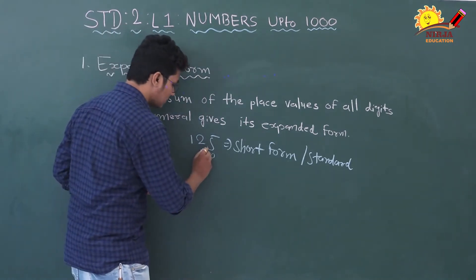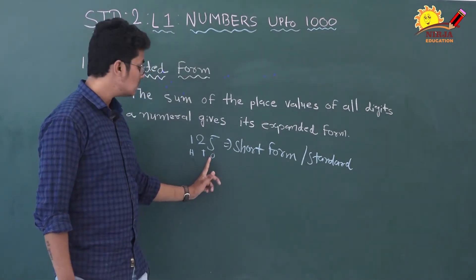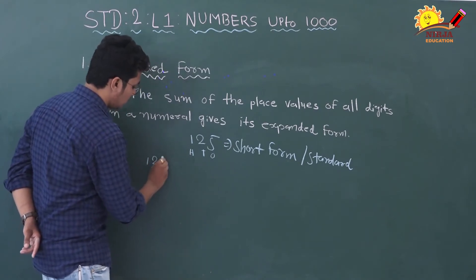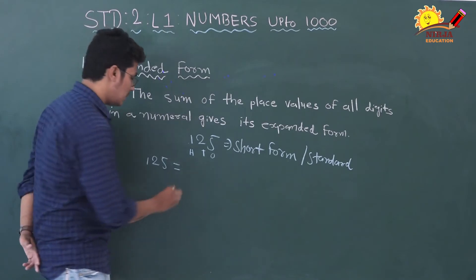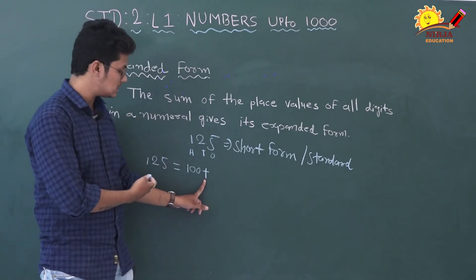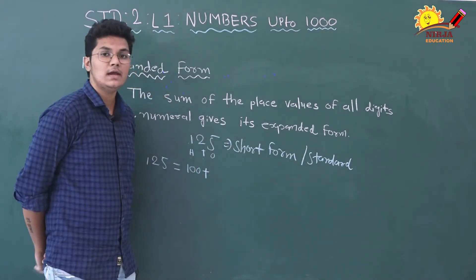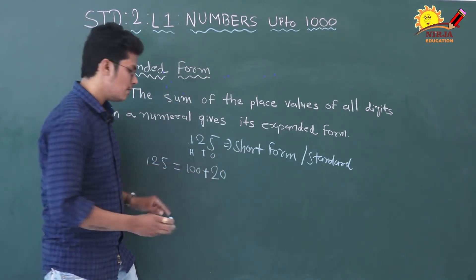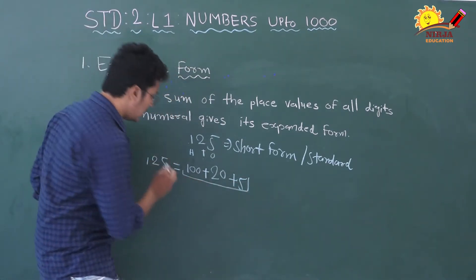2, tens ke place mein hai. And 1, hundreds ke place mein hai. So right side se shuru karke, sabse pehle ones aata hai, uske baad tens, uske baad hundreds. So, 125 ka expanded form: 1 hai 100 ke place pe, so 1 ki place value kya hoi? 100. Plus 2 ki place value kya hoi? 20. And 5, ones ke place mein hai, to 5 ki place value hoi? 5. So yeh jo dhek rahe hain, woh 125 number ka expanded form hai.